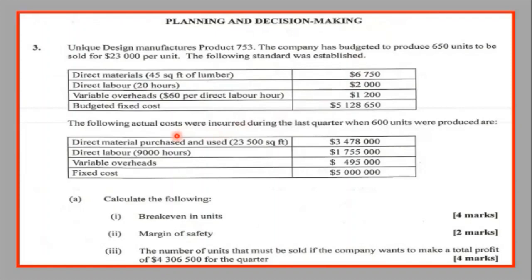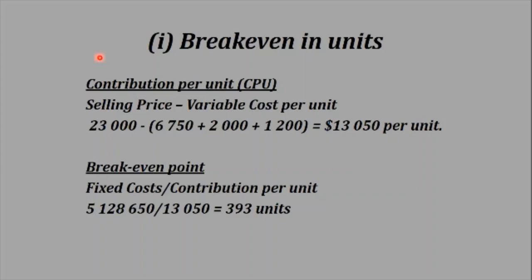Some of it is budgeted and some of it is actual cost. For the breakeven, margin of safety, and the target profit, we will use the budgeted data only. The actual data would be used for the variance analysis. For the breakeven in units, you may want to pause the video and look back at the data. The contribution per unit must be calculated first before you can calculate the breakeven point, because the formula is fixed cost divided by contribution per unit.